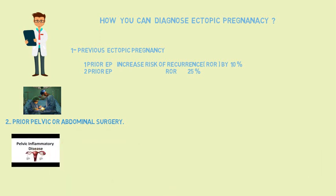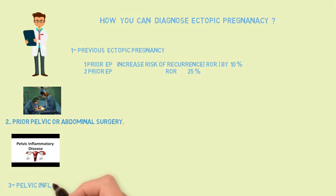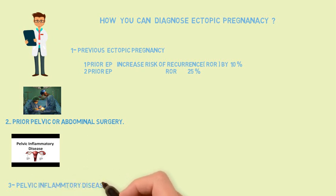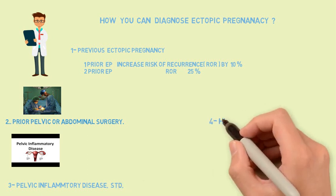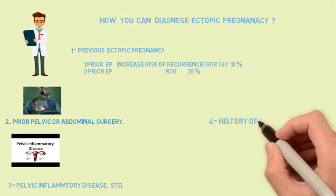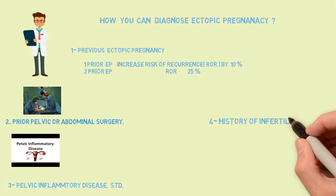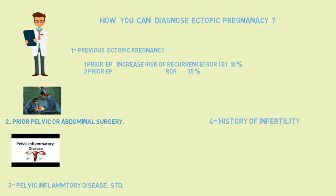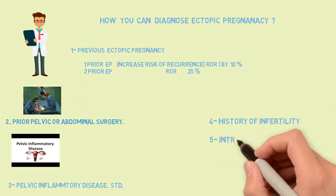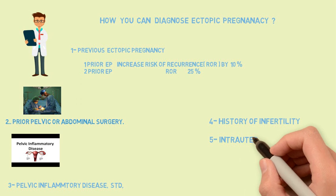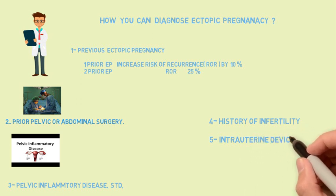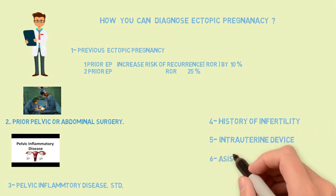Pelvic inflammatory disease is also one of the risk factors for ectopic pregnancy. Other risk factors include history of infertility, history of intrauterine device use, and assisted reproductive technology.